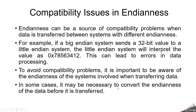Now let's discuss compatibility issues. Consider two machines — one follows big-endian and another follows little-endian. When you transfer data serially from the big-endian machine to the little-endian machine, the data is stored differently on each side. The big-endian machine stores MSB at the lower address, but the little-endian machine will interpret that same lower address as LSB, leading to errors in data processing.